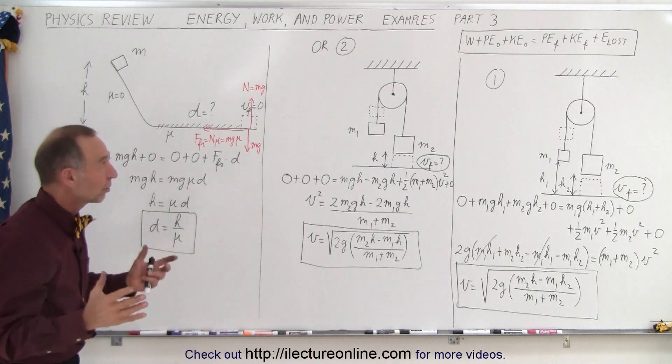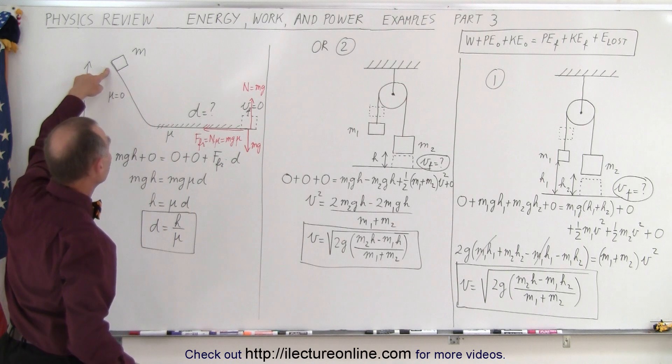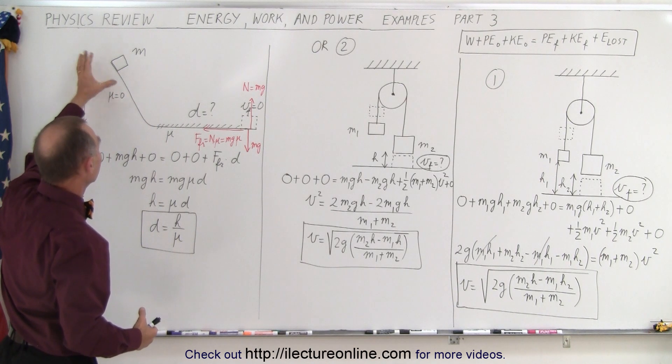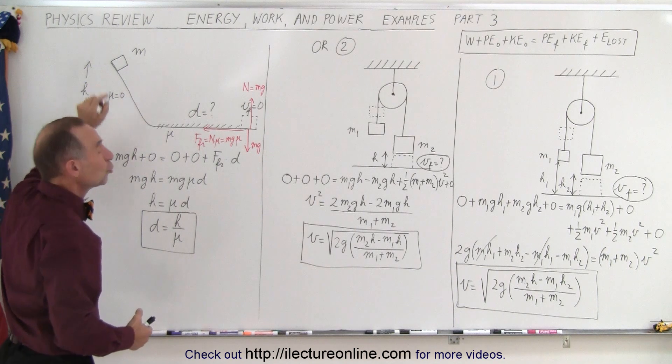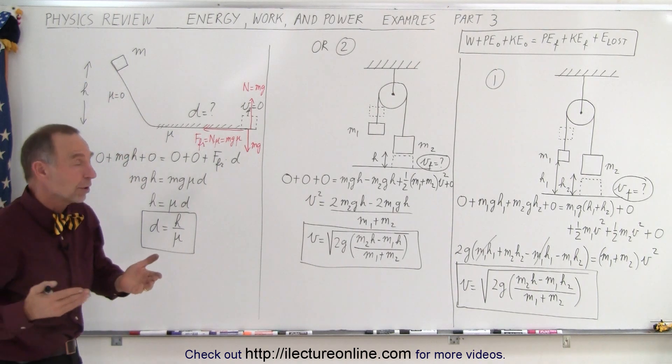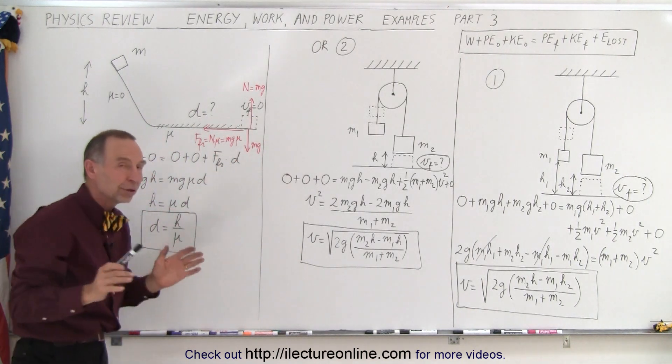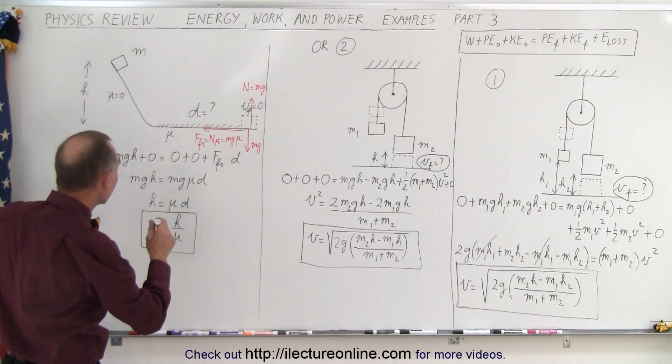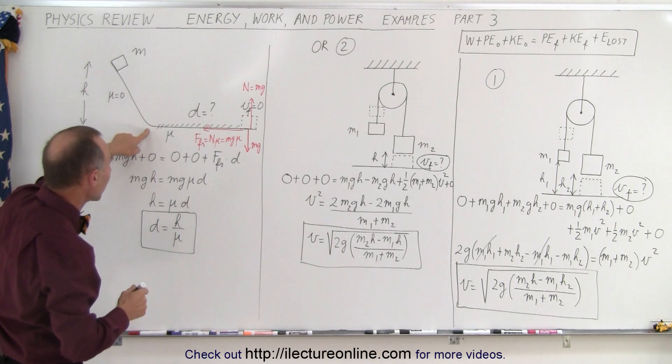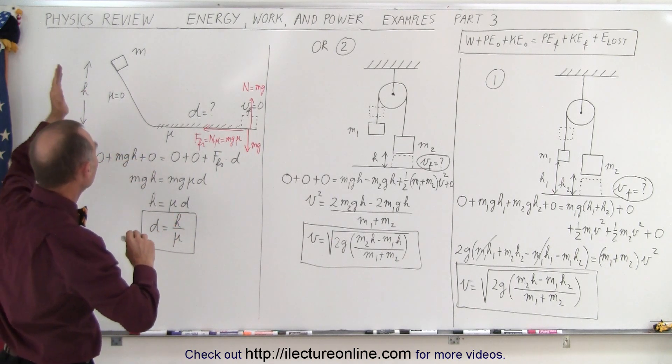So now what does the equation become? Well, we have no work put into the system. We simply put the block there, let it go. It has potential energy mgh, it has no kinetic energy because it has no velocity when it started. At the end when it's over here, now this is the beauty of this equation: we don't have to worry about how fast it's traveling when it gets to the bottom of the hill. We simply start with the initial position, the final position, ignore everything else in between.